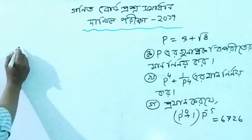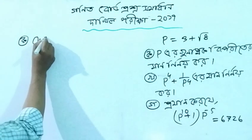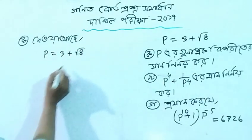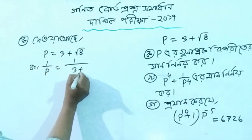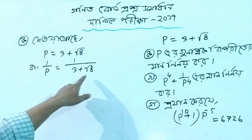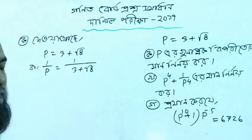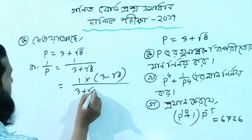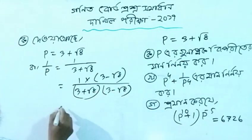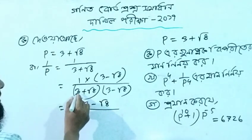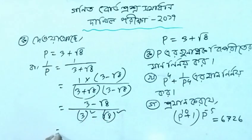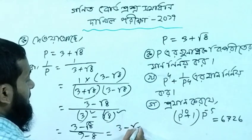What is the number of p? p equals 3 plus root 8. So 1 by p is equal to 1 by (3 plus root 8). Rationalizing: multiply by (3 minus root 8) over (3 minus root 8). That gives 3 minus root 8, since (3 plus root 8)(3 minus root 8) = 9 - 8 = 1. Therefore 1 by p equals 3 minus root 8.